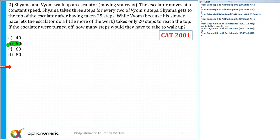Syama and Byome walk up an escalator, a moving escalator. The escalator moves at a constant speed. Syama takes three steps for every two of Byome's steps. That is important - three steps of Syama. Syama takes three steps for every two of Byome's steps in the same time duration.